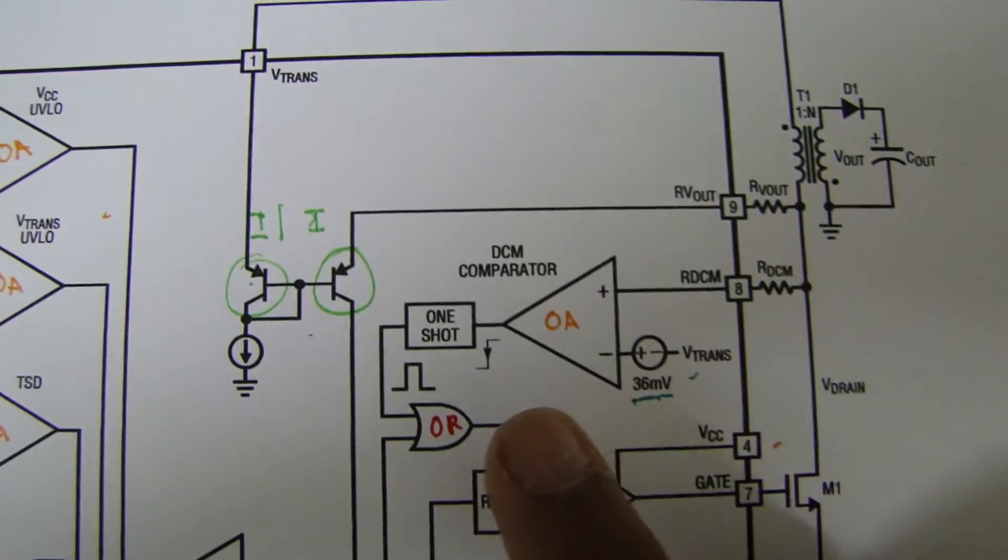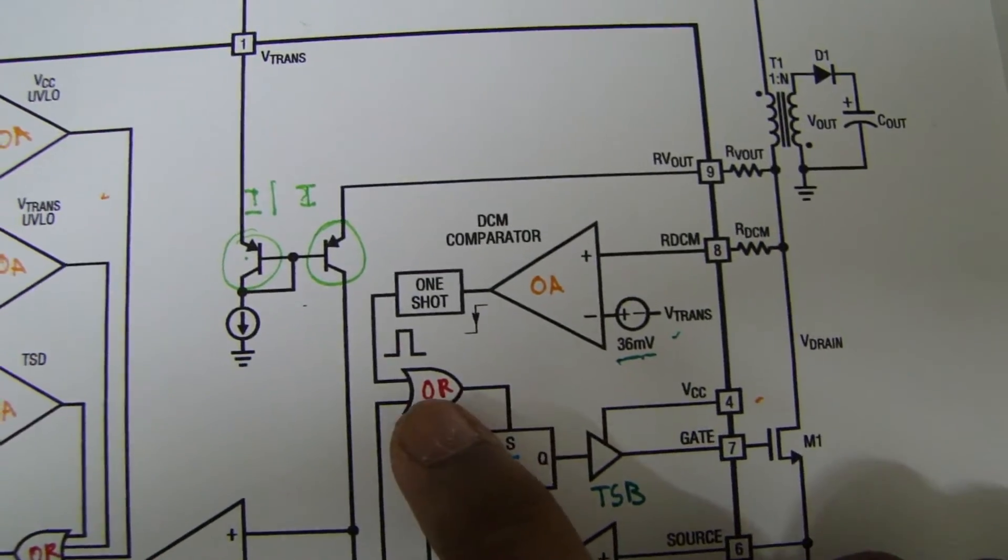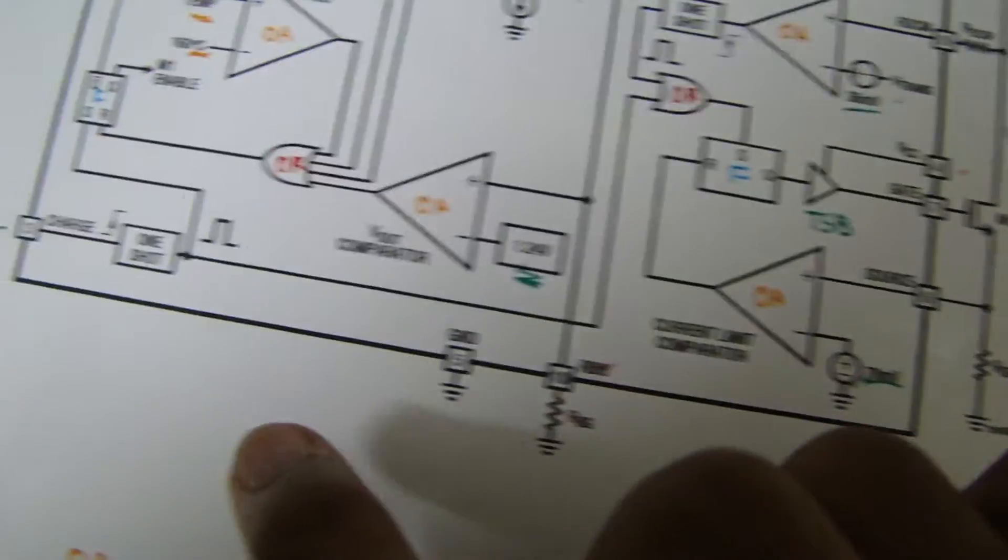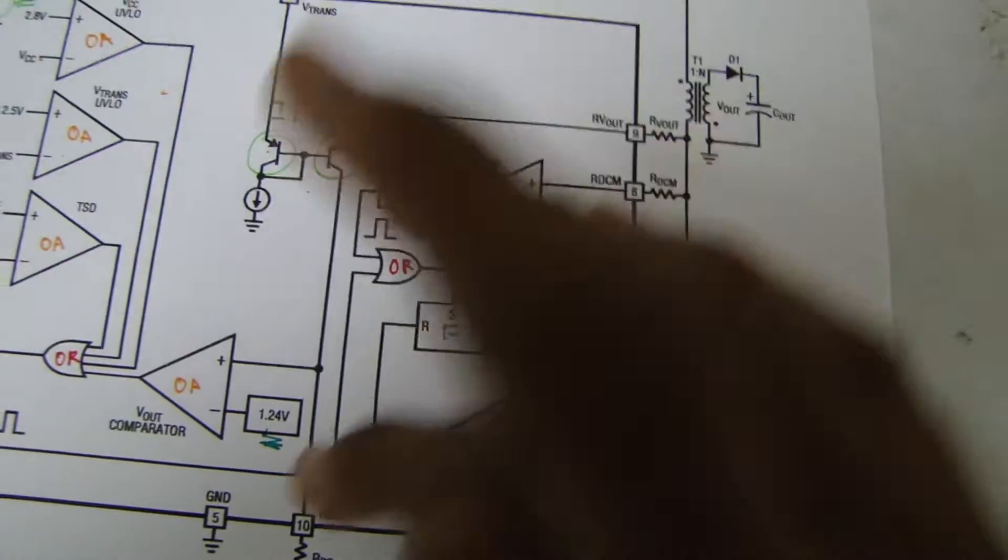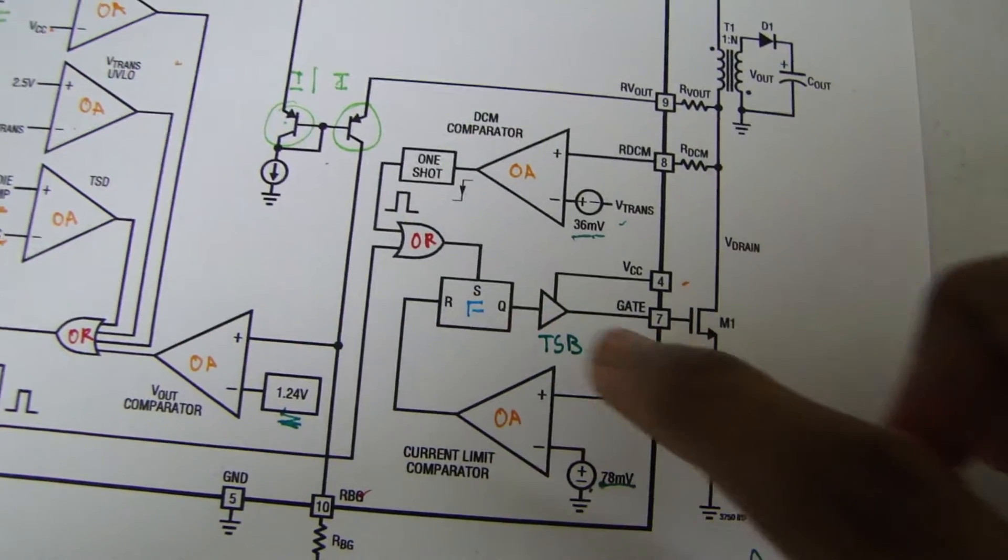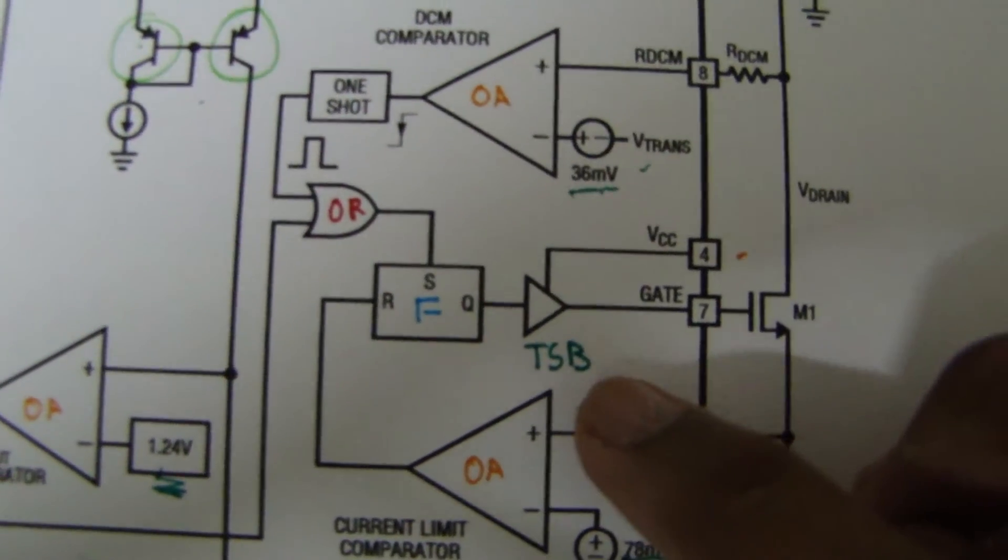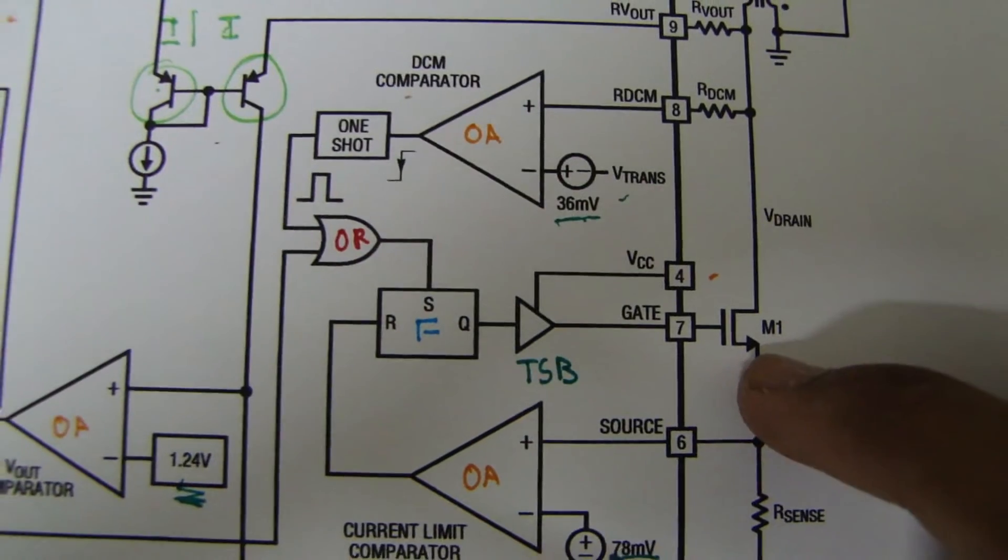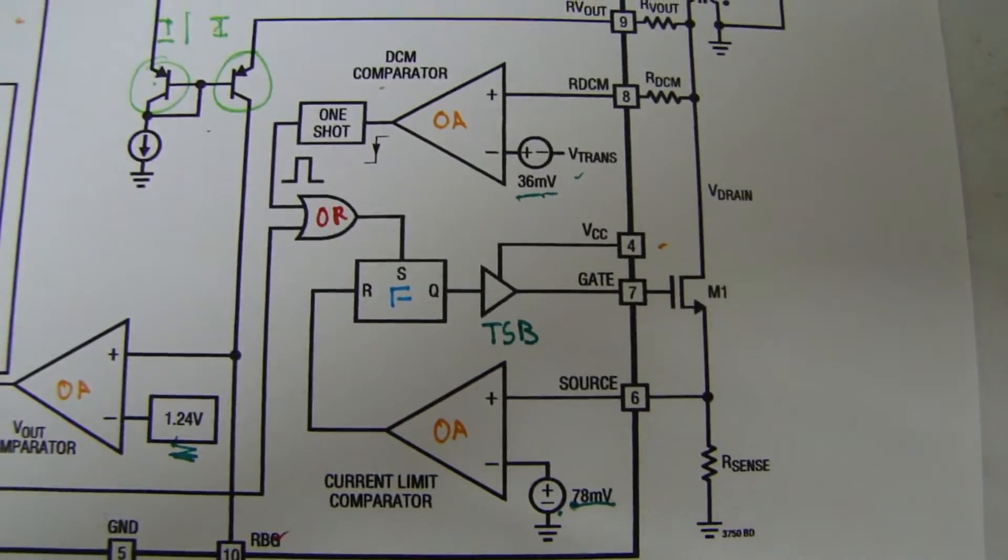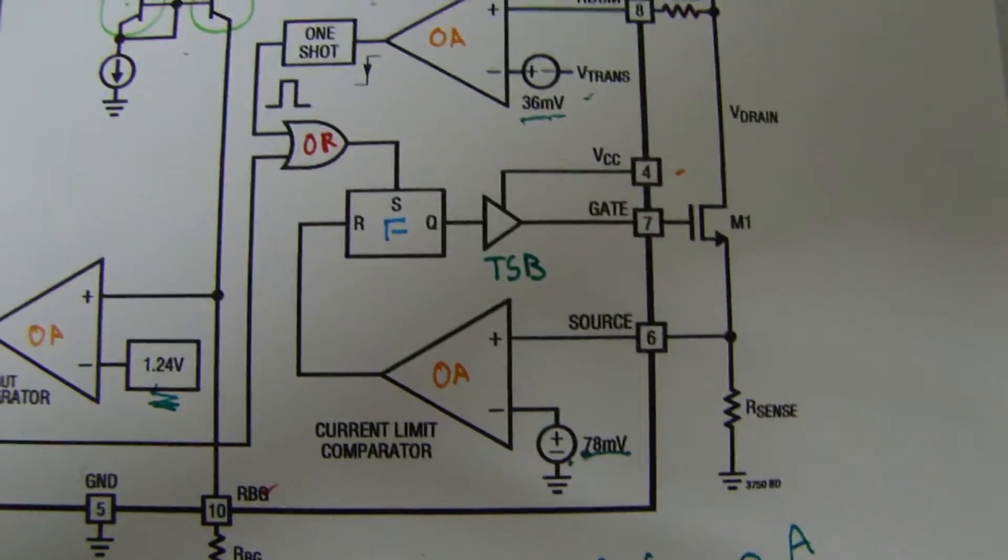So this one-shot controls this OR gate which is also connected to charge voltage. So this OR gate controls this flip-flop which uses this tri-state buffer to drive the gate of this MOSFET to 5 volts and minus 2 volts, I think, according to the data sheet.